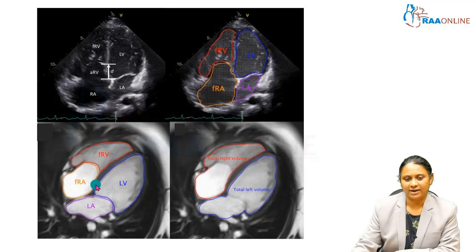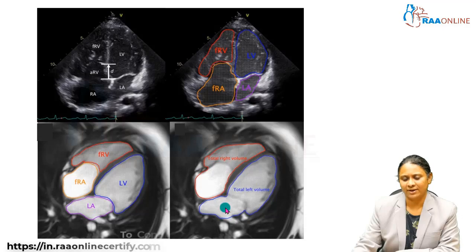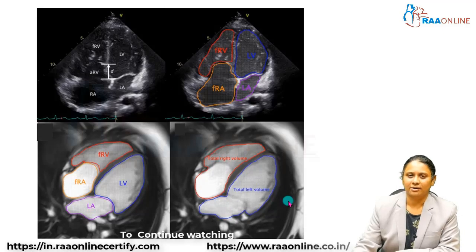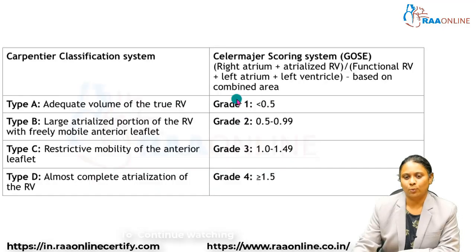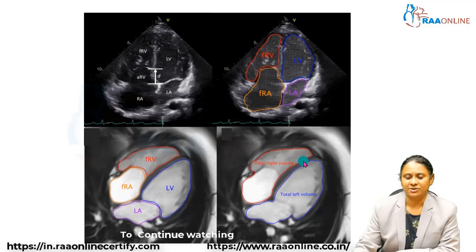Here, the right atrial portion with the atrialized portion of the ventricle can be seen, and the ratio is not more than 0.5. This represents a milder or grade 1 of the Seller Major scoring system for Ebstein's anomaly.